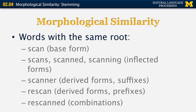It can also add a suffix or ending like '-er', which forms a derived word — a noun in this particular case. We can also have derived forms that use prefixes; for example, the verb 're-scan' means to scan something for a second time. And we can have combinations of derived and inflected forms, such as 're-scanned', which has both a prefix for derivation and a suffix for inflection.